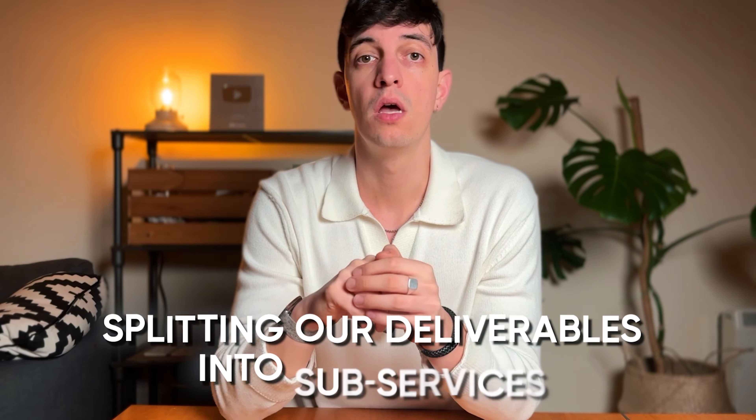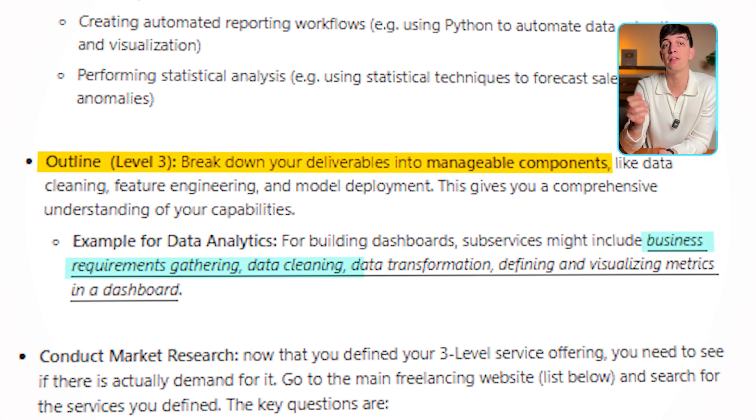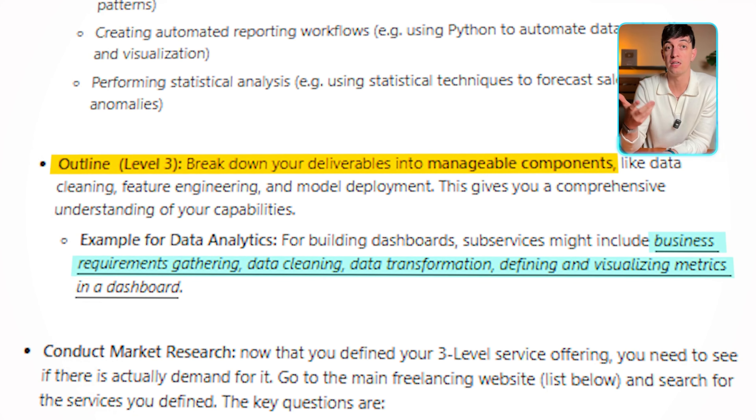For level three, we go even deeper — we break down our deliverables from level two into manageable components, splitting them into subservices. Using our example, if level two is building dashboards and reports, then level three could involve gathering business requirements, cleaning the data, transforming the data, defining the metrics, and visualizing the metrics in a dashboard. The idea is to break things down to really understand the subservices you can offer to potential clients. Once you've done this exercise defining levels one, two, and three, you should have a clear idea of your core service.